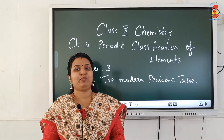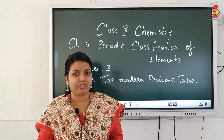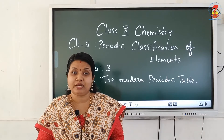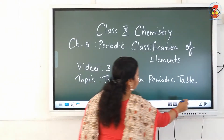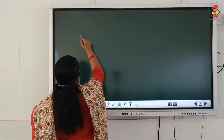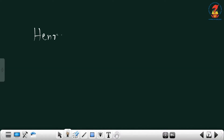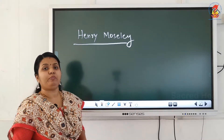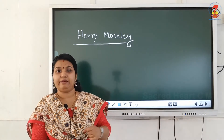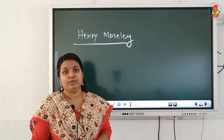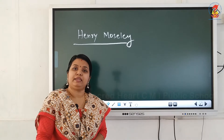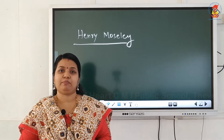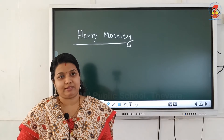Today we move on to the currently used periodic table, that is the Modern Periodic Table. The Modern Periodic Table was prepared by Henry Moseley. Please learn this — a likely exam question is: who prepared the Modern Periodic Table? The answer is Henry Moseley. He said that atomic number of an element is a more fundamental property than atomic mass.